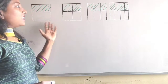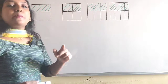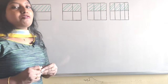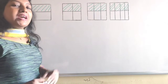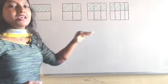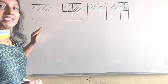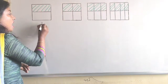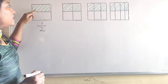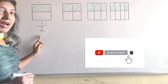If you observe, here we have squares. These are all of the same size but divided into different number of parts. Let's start writing the fractions of these squares. If you observe the first square, it is divided into half of the whole part. That means, the shaded region of the first square is half part of the square.